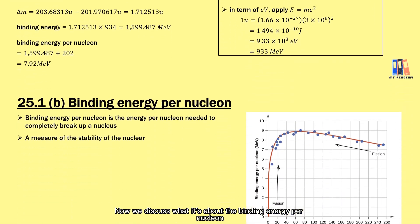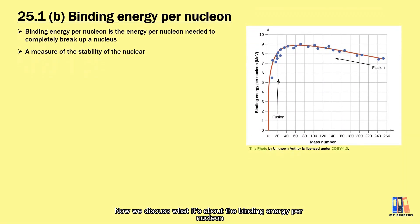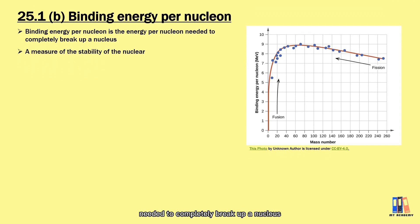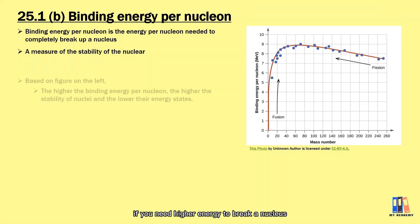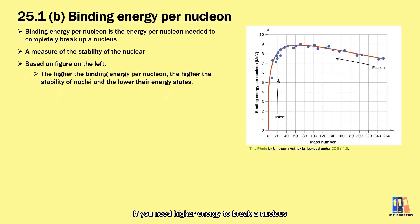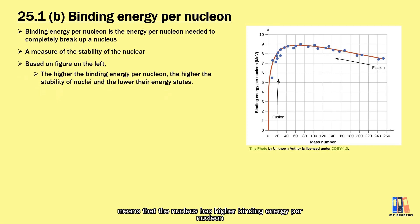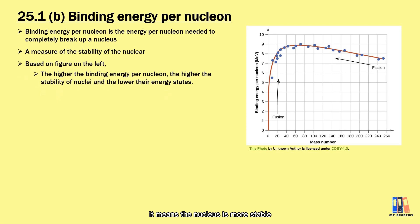Now we discuss what binding energy per nucleon means. It is the energy per nucleon needed to completely break apart a nucleus, and it is a measure of stability. If higher energy is needed to remove a nucleon, the nucleon has higher binding energy per nucleon, meaning the nucleus is more stable and at a lower energy state.